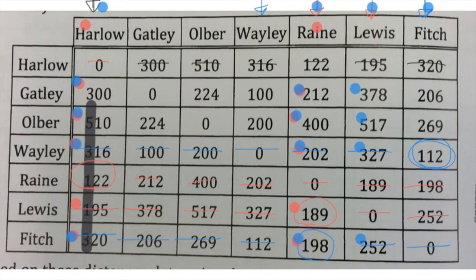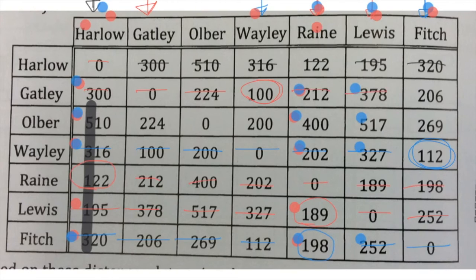This time around we're looking in this one, this one, and this one — all five of those. We look down those columns and look for the smallest number that's not crossed out. 100. Which is Gatley. We need to cross out all of the numbers in that row.